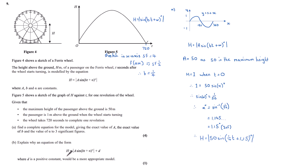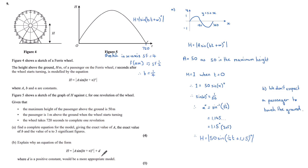The next part asks: explain why an equation of the form h equals the modulus of a sine bt plus alpha plus d, where d is a positive constant, would be a more appropriate model. Looking back, h models the height above ground of a passenger. Currently h can take a value of zero, and we don't really expect a passenger to be touching the floor. So d is an appropriate addition — we don't expect a passenger to be touching the ground.